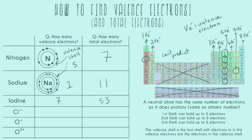Now let's look at a few ions because they're a little bit trickier. This is chlorine with a one-minus charge. First we find how many total electrons a neutral chlorine has — we find it right above iodine, so neutral chlorine has 17 electrons. This ion has an extra charge of minus one, and that means it has one extra electron because electrons are negatively charged. If you have a negative charge, you have more electrons than protons. So this chlorine ion has a total of 18 electrons. For valence: chlorine is in the seventh column so it normally has seven valence electrons, and with one additional electron it now has eight valence electrons.